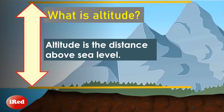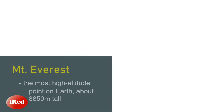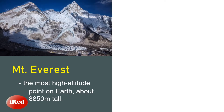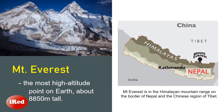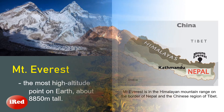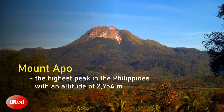First, let's recall what altitude is. Altitude is defined as the distance above sea level. The highest altitude point on Earth is Mount Everest in the Himalayan mountain range, on the border of Nepal in the Chinese region of Tibet. Mount Everest is about 8,850 meters tall. In the Philippines, the highest peak is Mount Apo with an altitude of 2,954 meters.